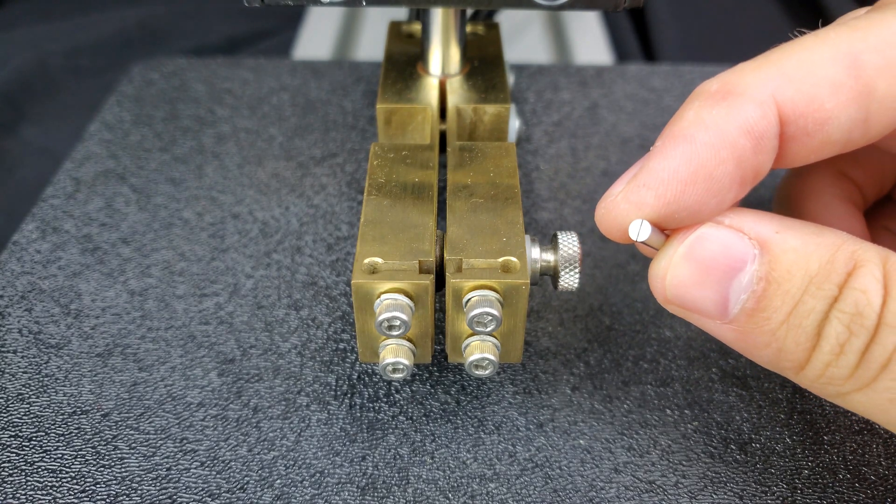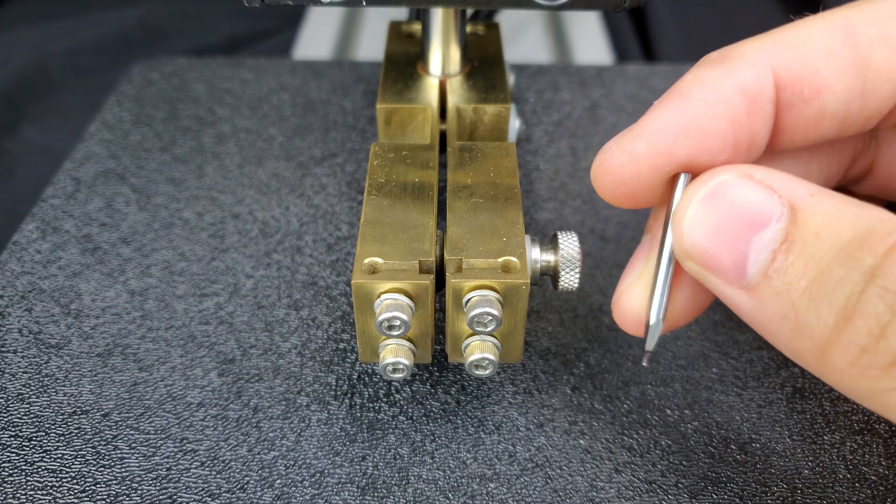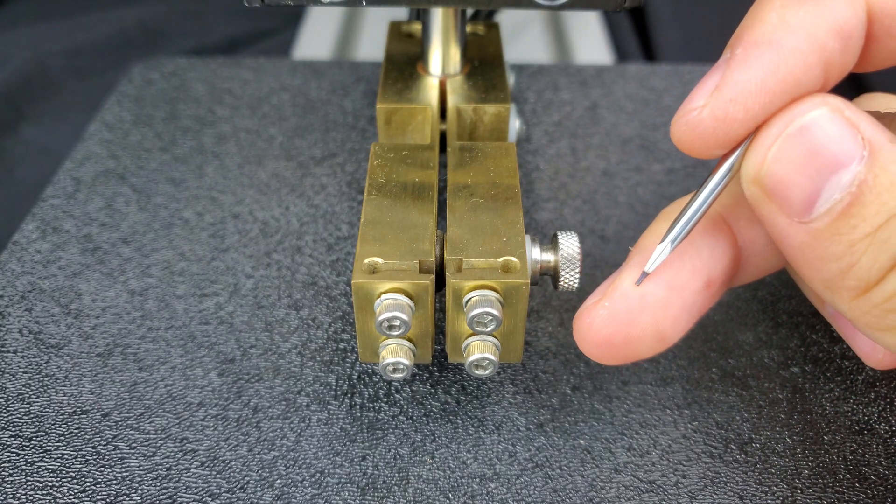This electrode is two separate electrodes that have been bonded together and they join at the tip.